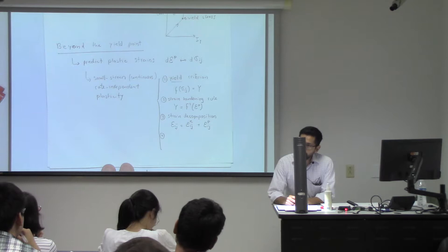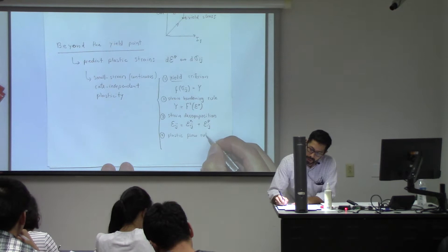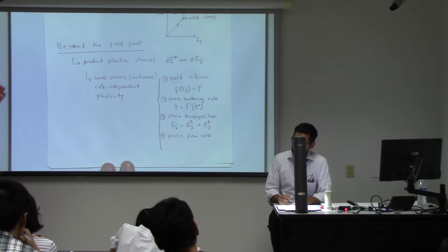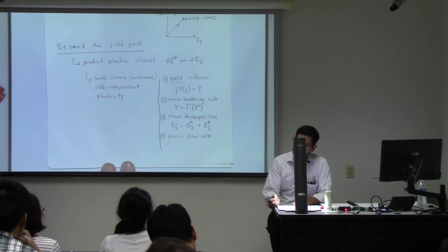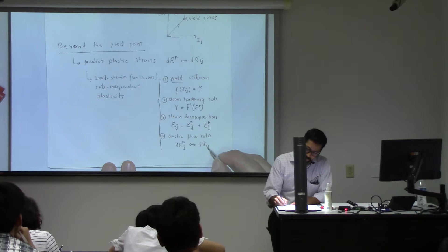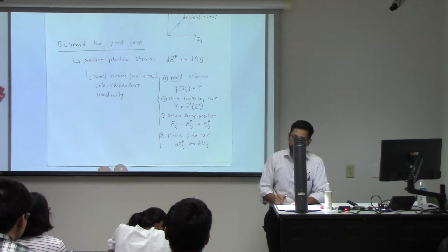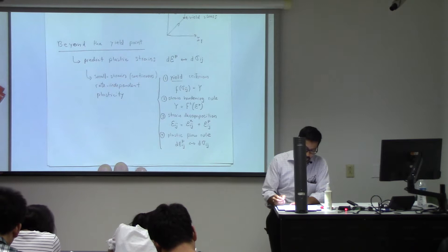How do I calculate the plastic strains? This is where we get into something new. We need what is called a plastic flow rule — basically an equation that allows you to calculate plastic strains as a function of variations of the stress tensor. The variations in plastic strain depend on the variations of the stress tensor. We go step by step. Don't worry if this seems too abstract right now — we're going to see examples of all of these things as we continue.